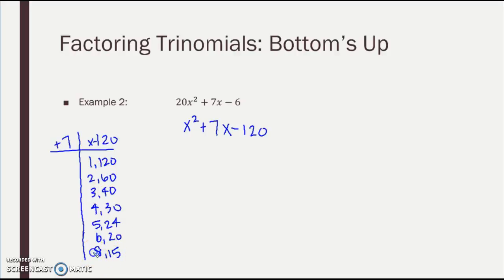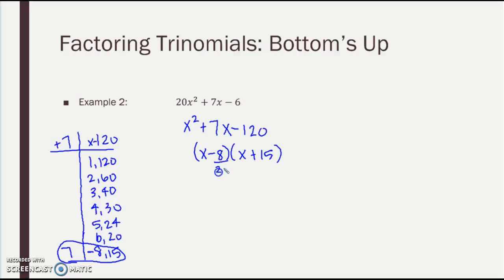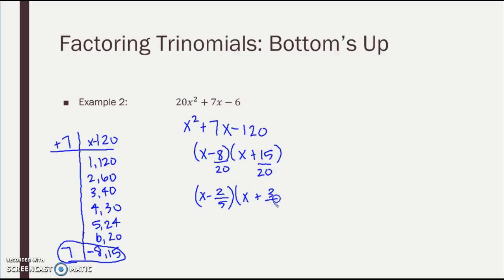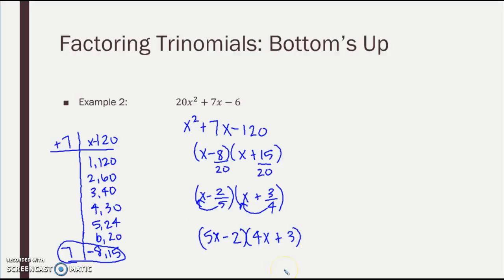So I come back and write X minus 8 times X plus 15. But I've got to pull that A back out, so I divide both by my original A of 20. 8 over 20 simplifies to 2 over 5, and 15 over 20 simplifies to 3 over 4. Can't have fractions, so now I do Bottoms Up — take the bottom and put it up front. So I get 5X minus 2 times 4X plus 3. Much quicker than guessing and checking.